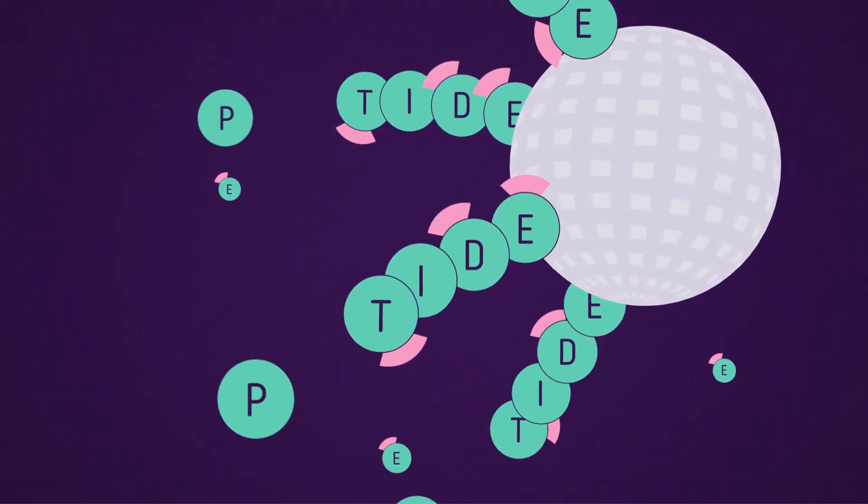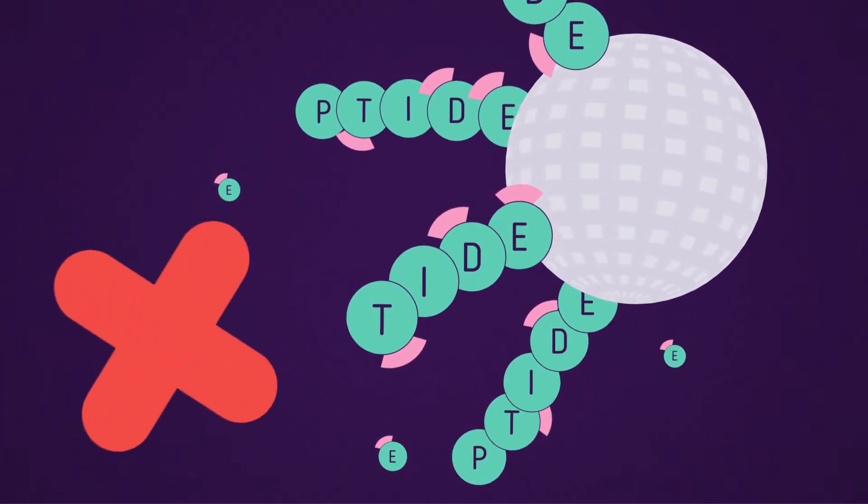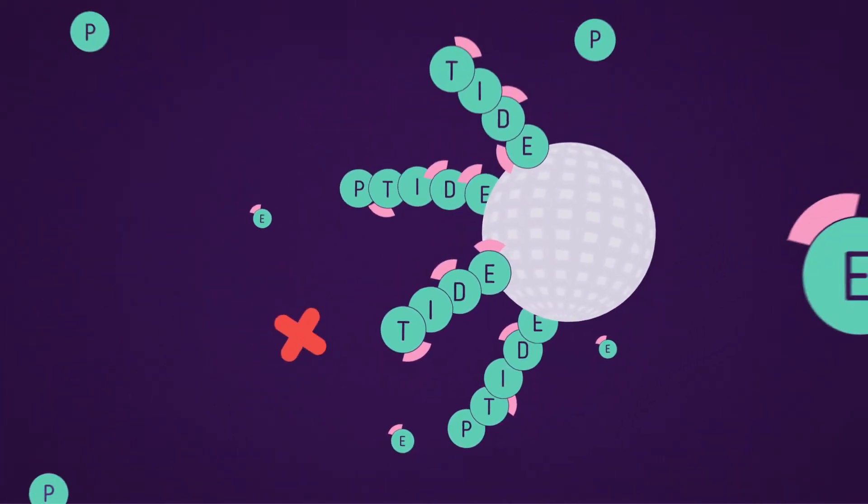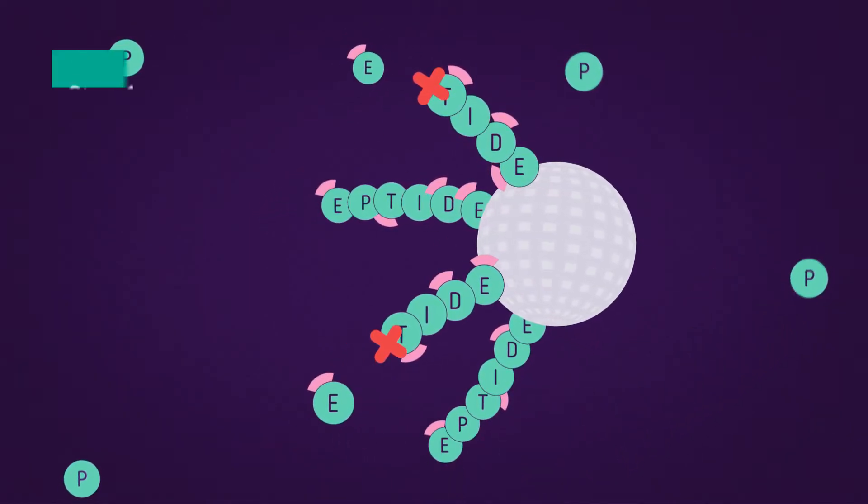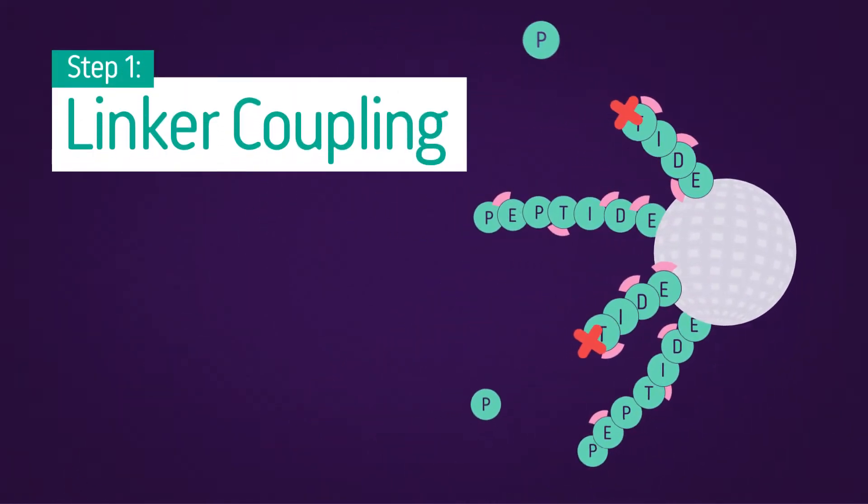Very important! You need to cap using acetic anhydride to deactivate unreacted sites on your growing chain. Capping ensures that only your target peptide sequence is ready for step one of the purification process.